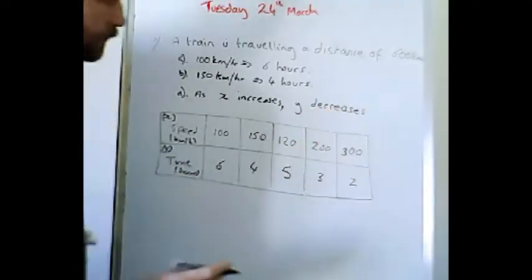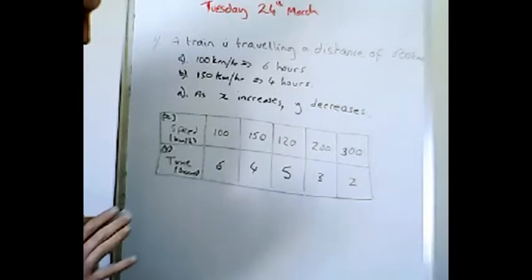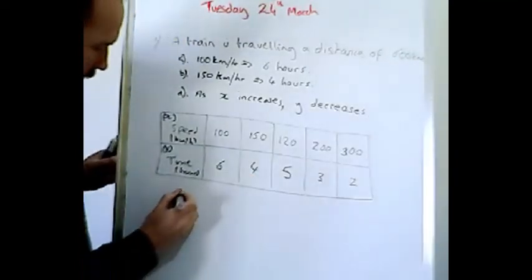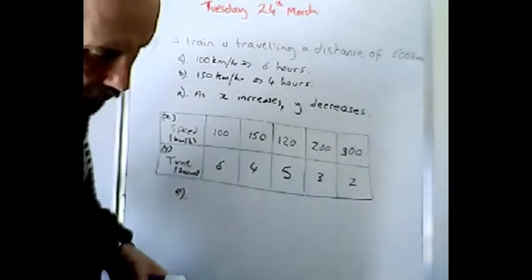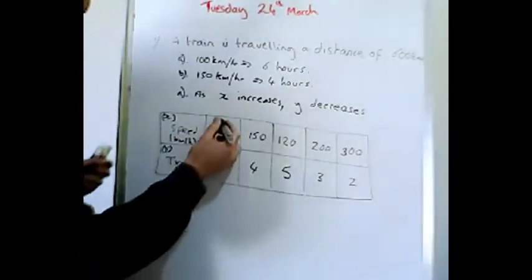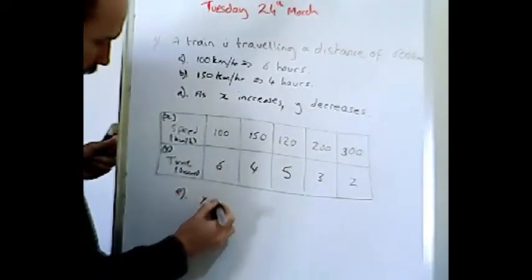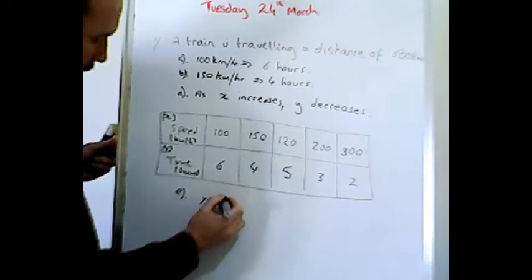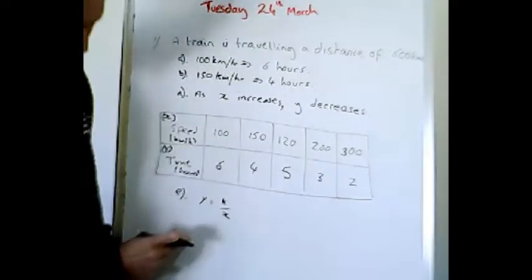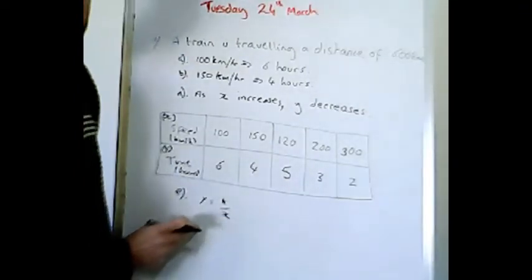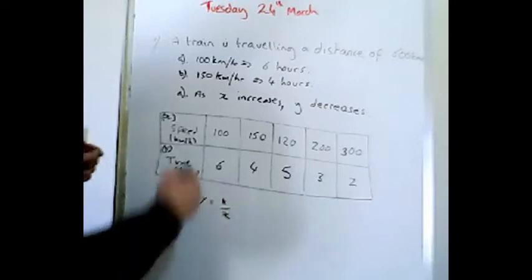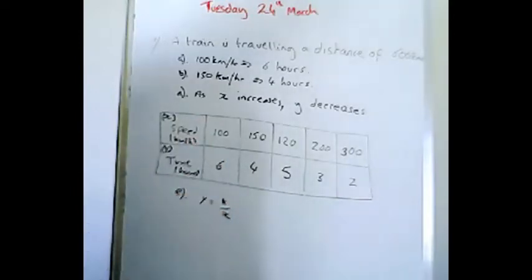It then says in E we need to write down a formula here for x and y. Now remember what I said on the first video, we've got y equals something over x. That's our first starting point for any inverse algebraic equation. So we've got y equals something over x. Let's put the values in and see if we can find out.